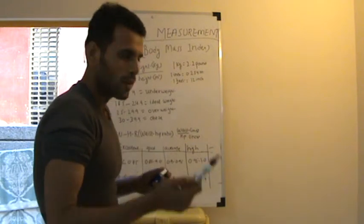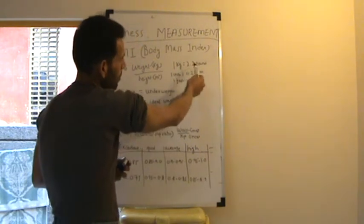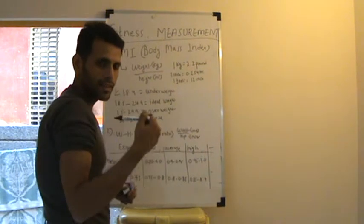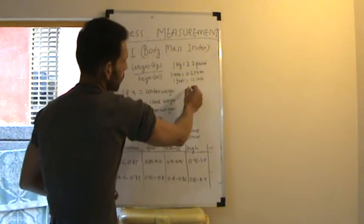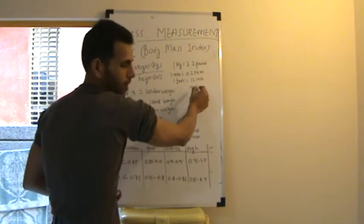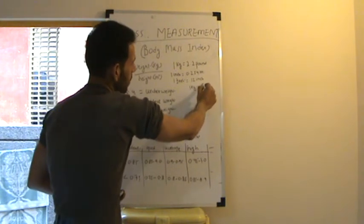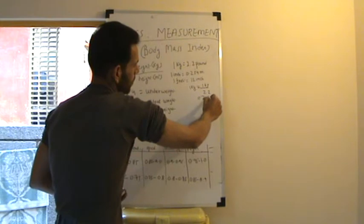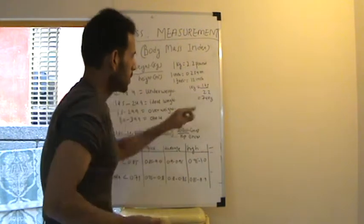So if I weigh 163 pounds, for me the kilogram value would be 163 divided by 2.2, that is 74 kilograms. So I weigh 74 kg.